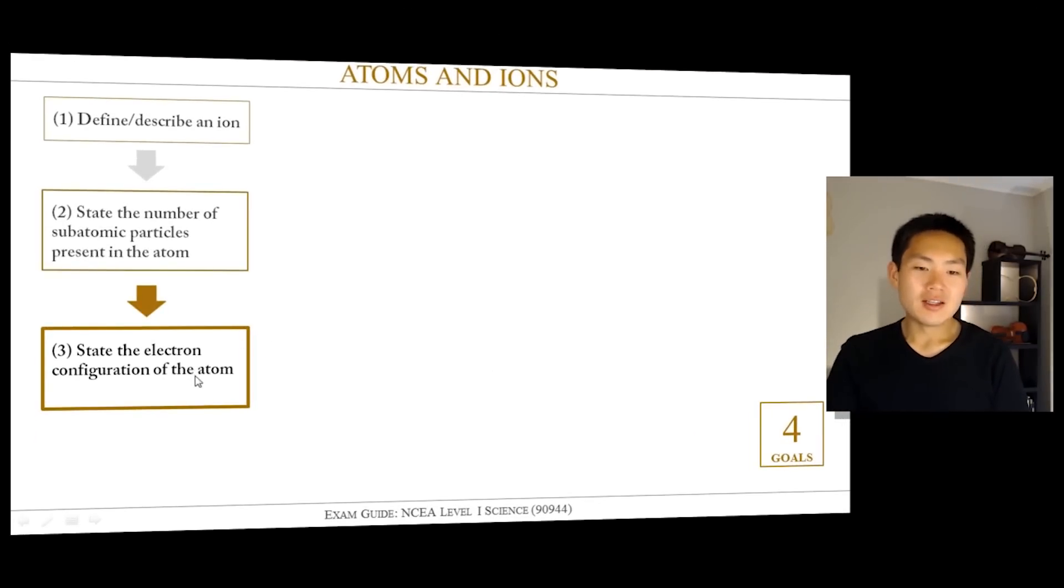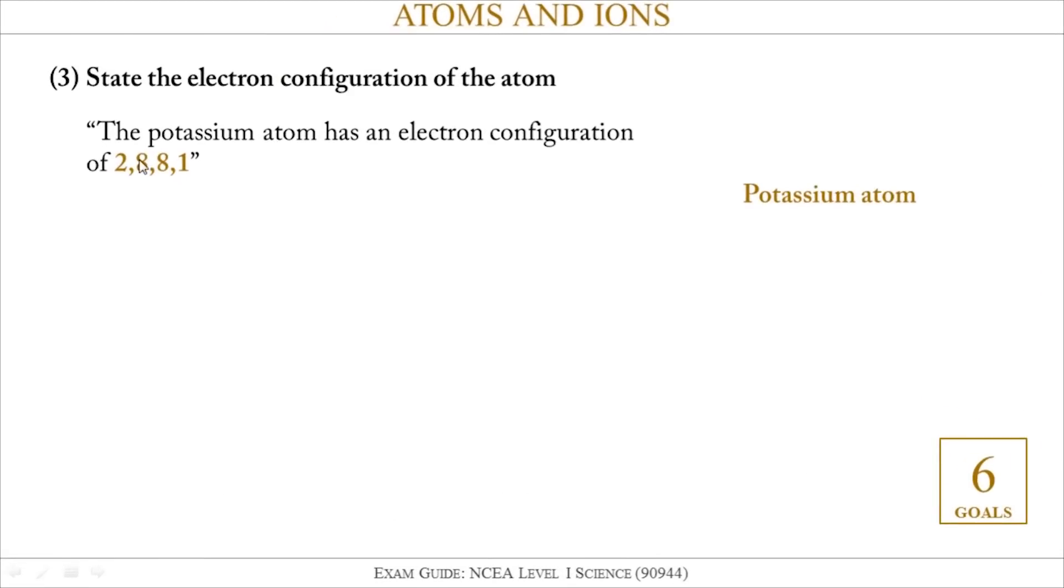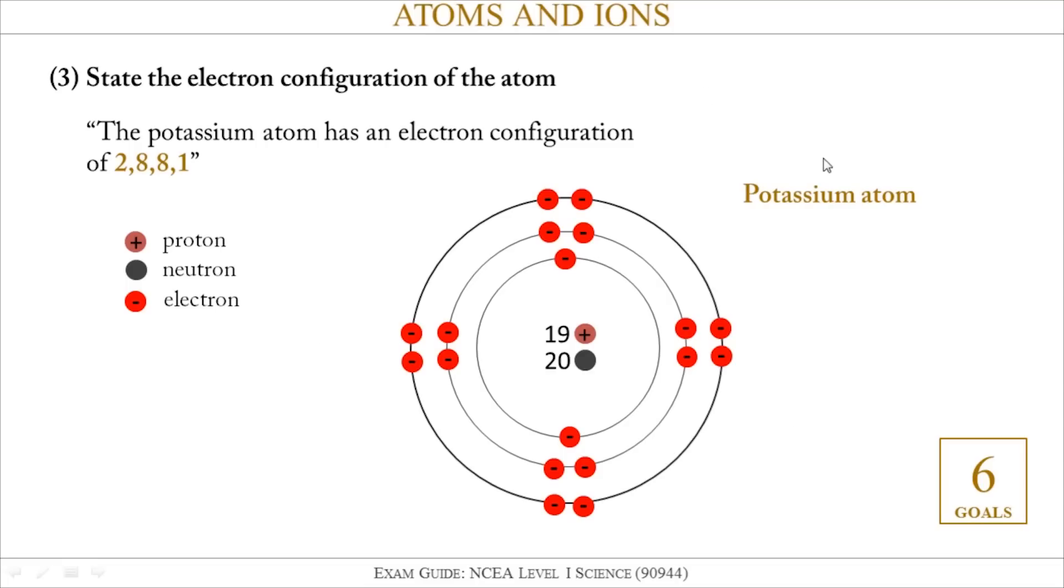Next thing I would do is to state the electron configuration of the atom. Using potassium as an example again, I would write: the potassium atom has an electron configuration of 2,8,8,1. You'll notice I'm using commas here, not slashes or full stops or dashes. For some people it might be easier to actually draw the atom, which is fine. I've included a key - right in the middle I've got 19 protons and 20 neutrons. Your first shell will hold two electrons, then your second shell will hold eight, your third shell holds eight, and then your final shell put the rest of your electrons in there. So we get two in the first shell, eight in the second shell, eight in the third shell, and one in the fourth shell - that gives us 2,8,8,1.